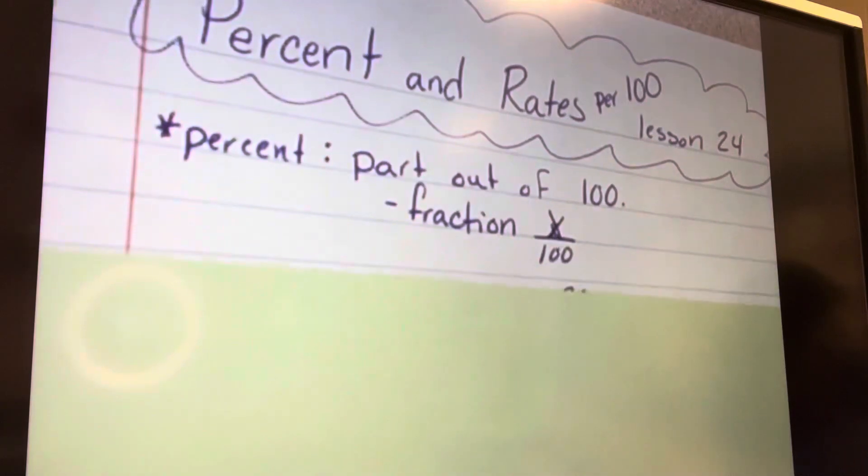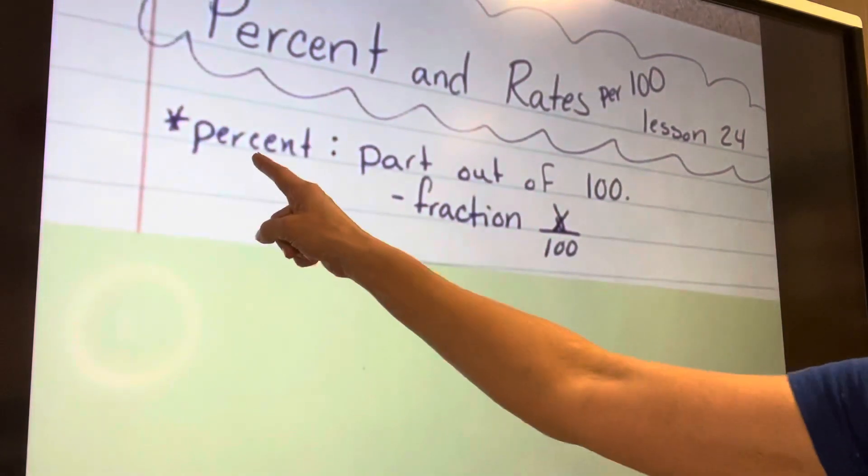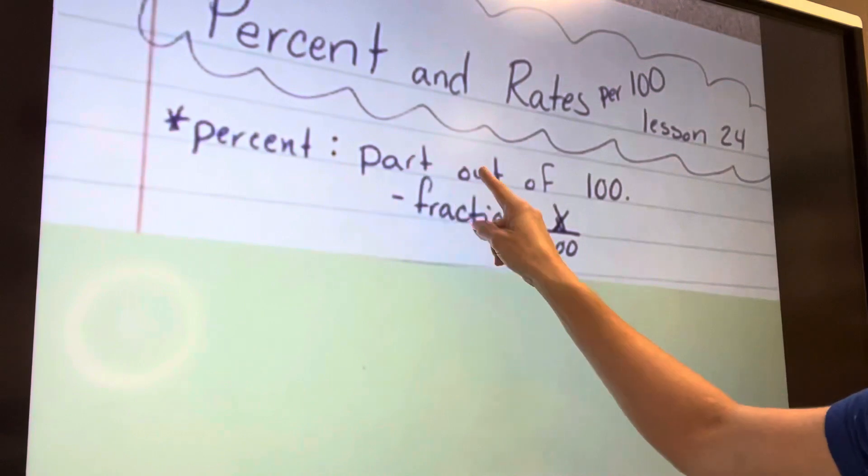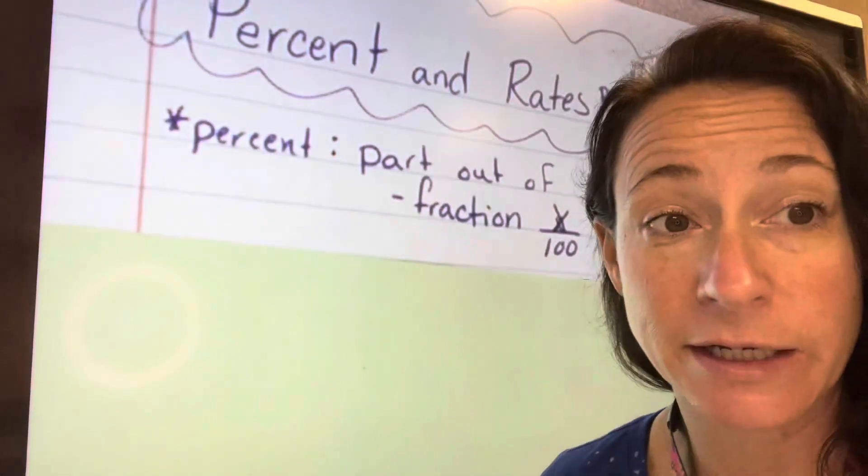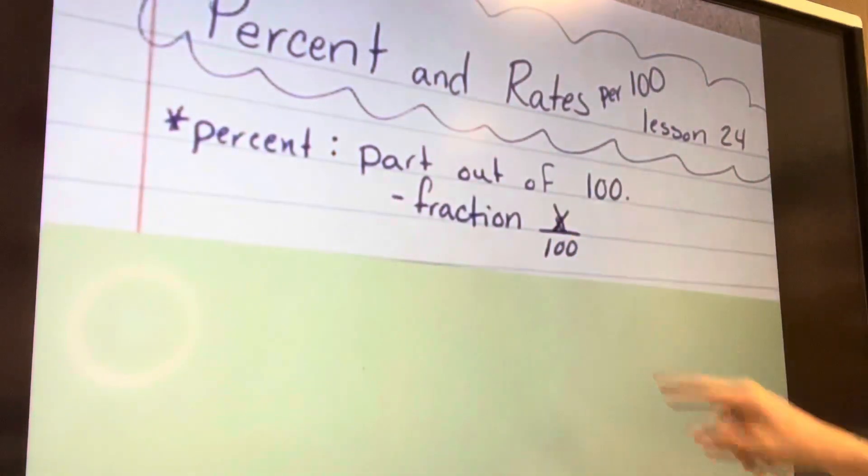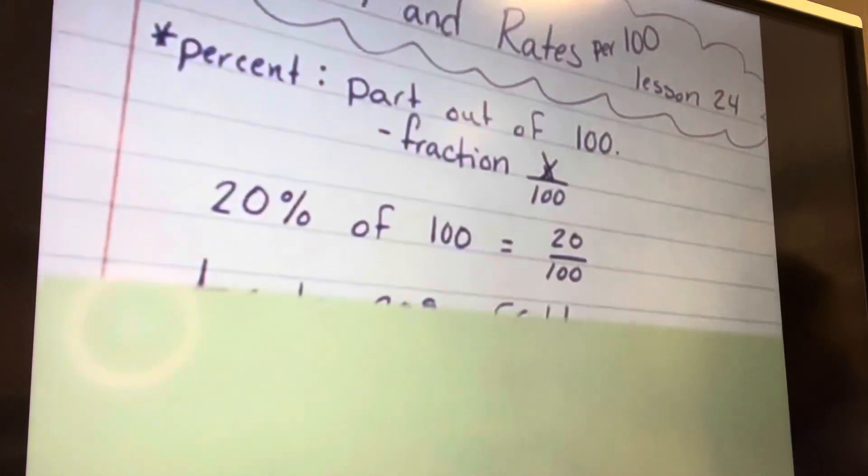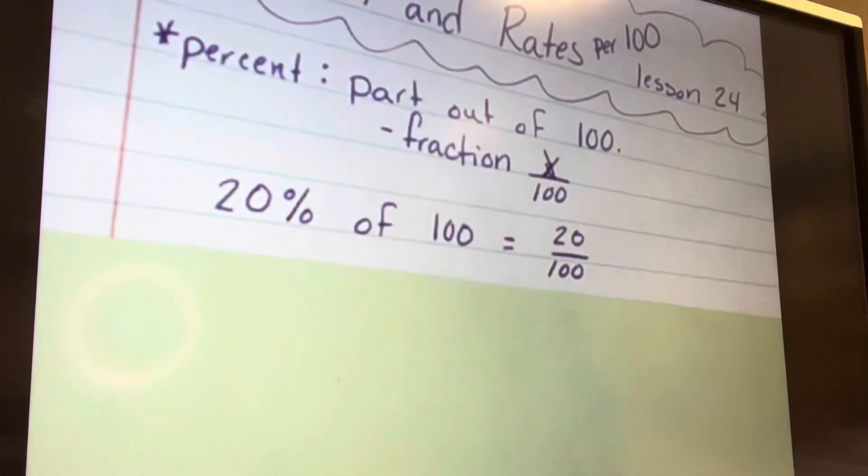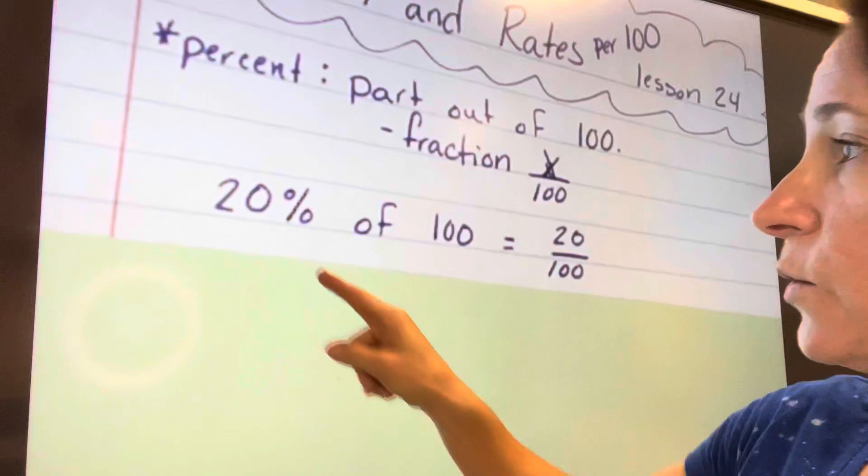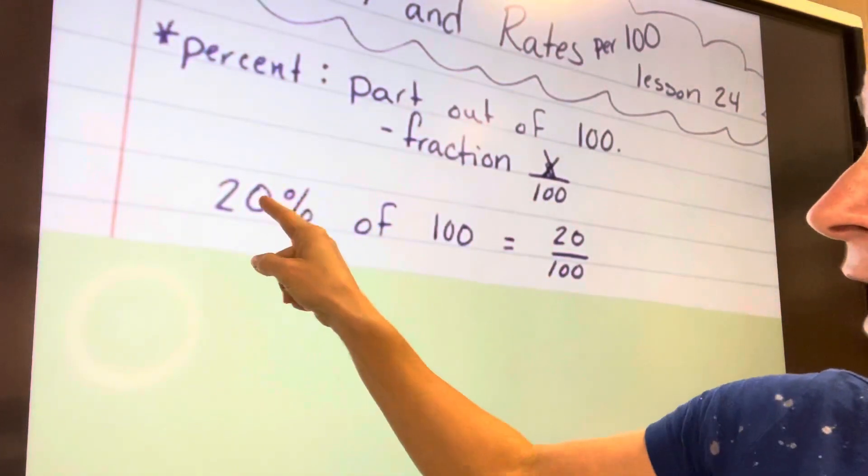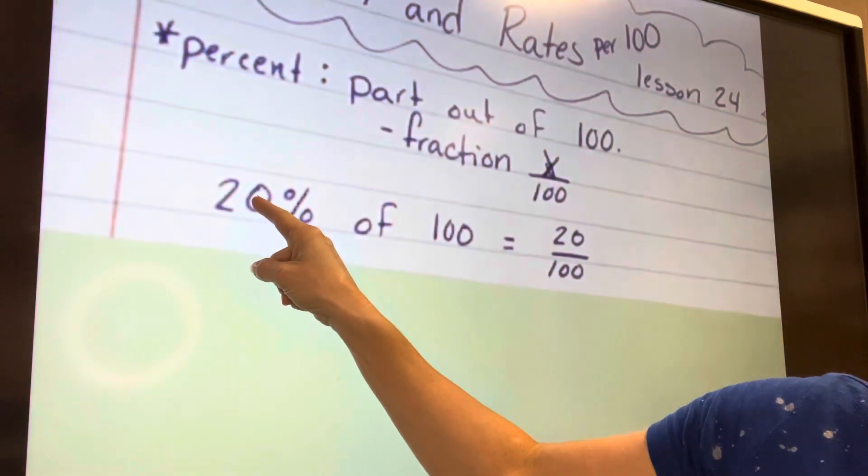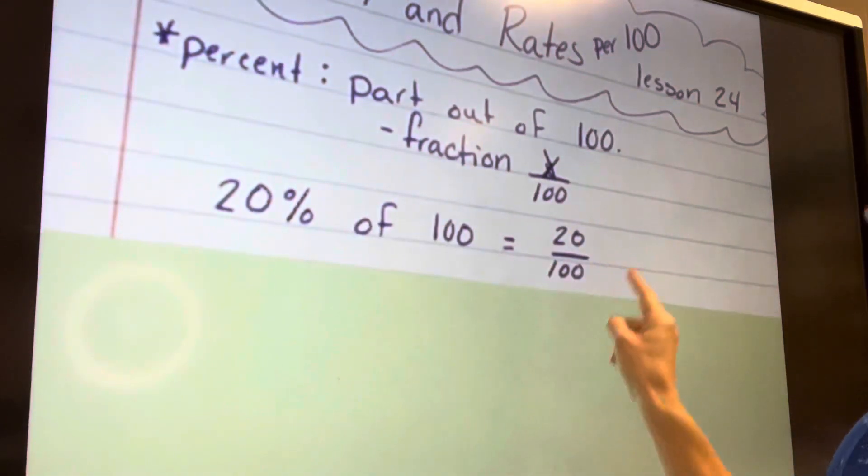So on the first part of our notes, what is a percent? The definition is a part out of 100. We write that as a fraction as X or Y or Z or whatever out of 100. As an example, 20% of 100 is 20 out of 100 or 20 hundredths. When you see a number with a percent sign, that number can be written as a percent fraction of that number over 100.